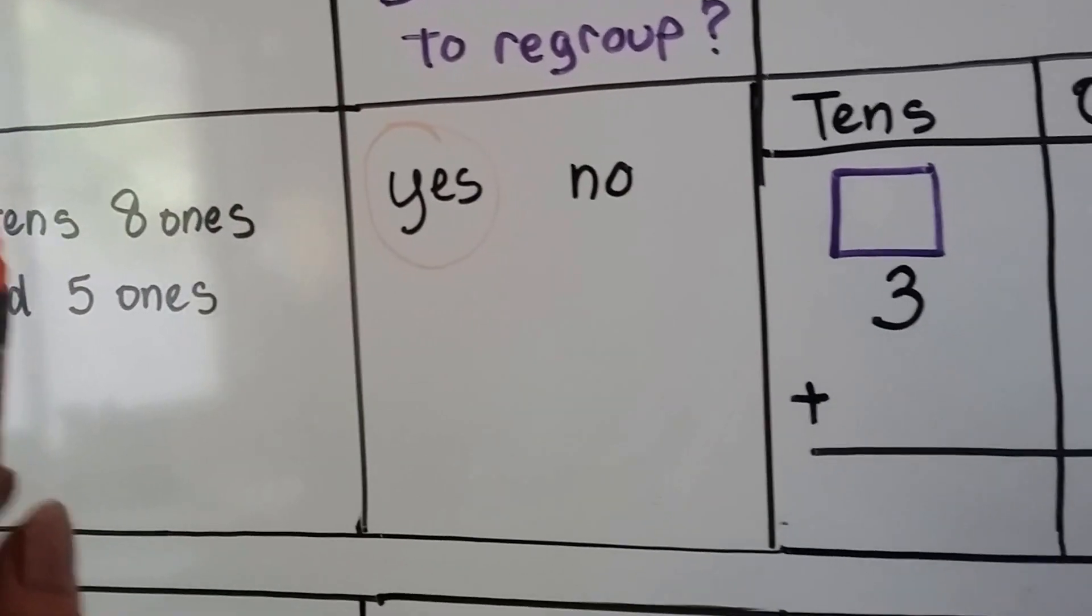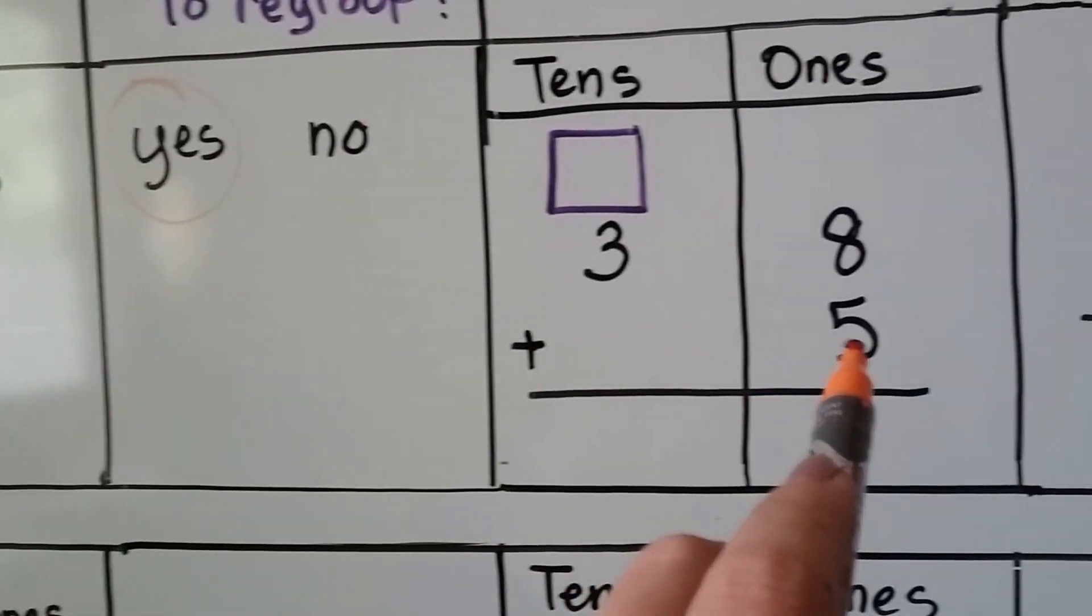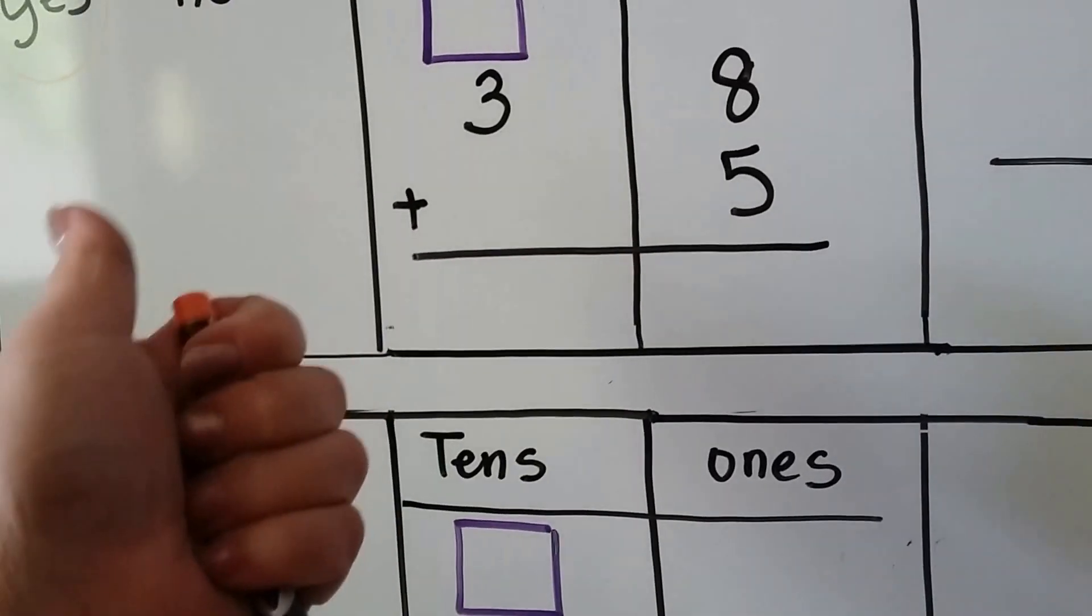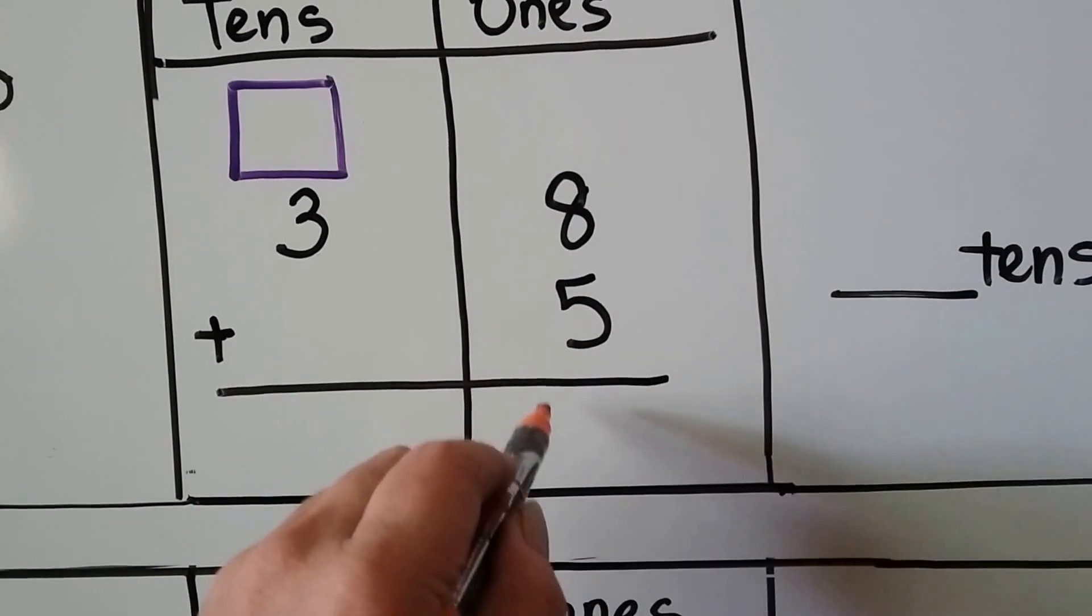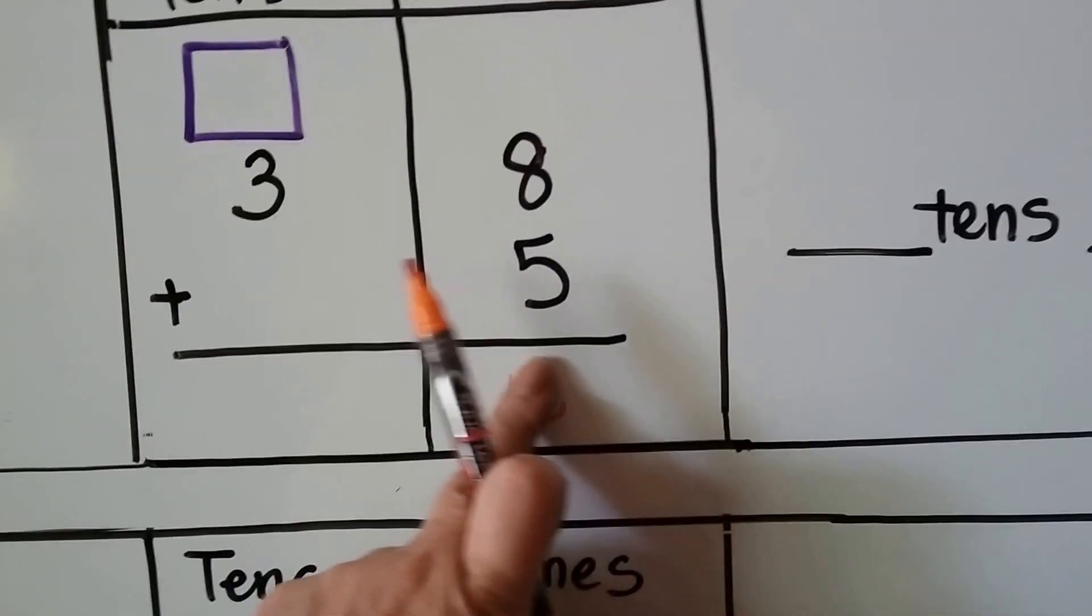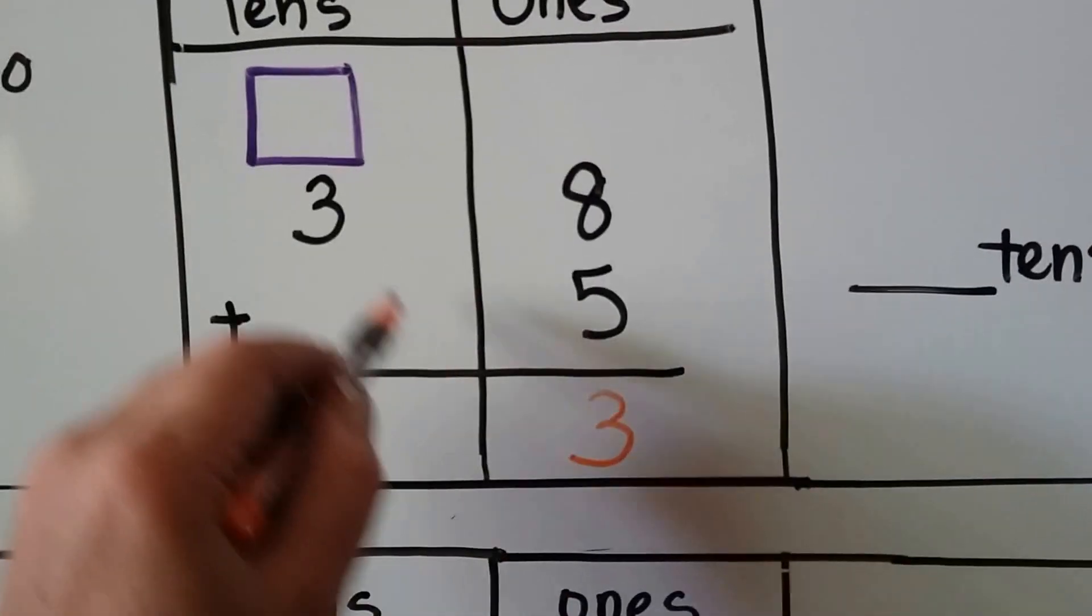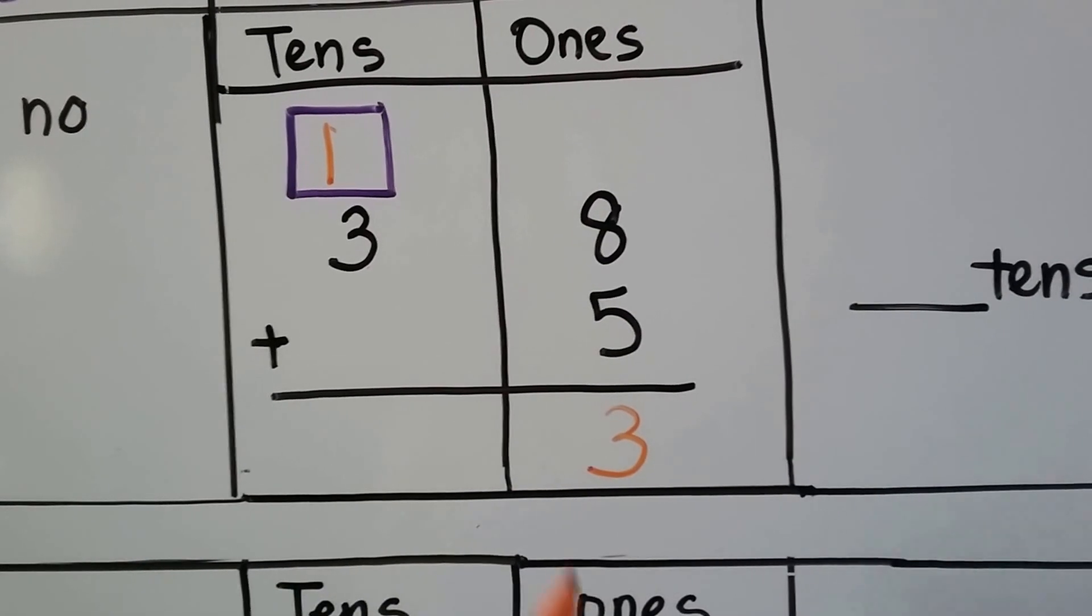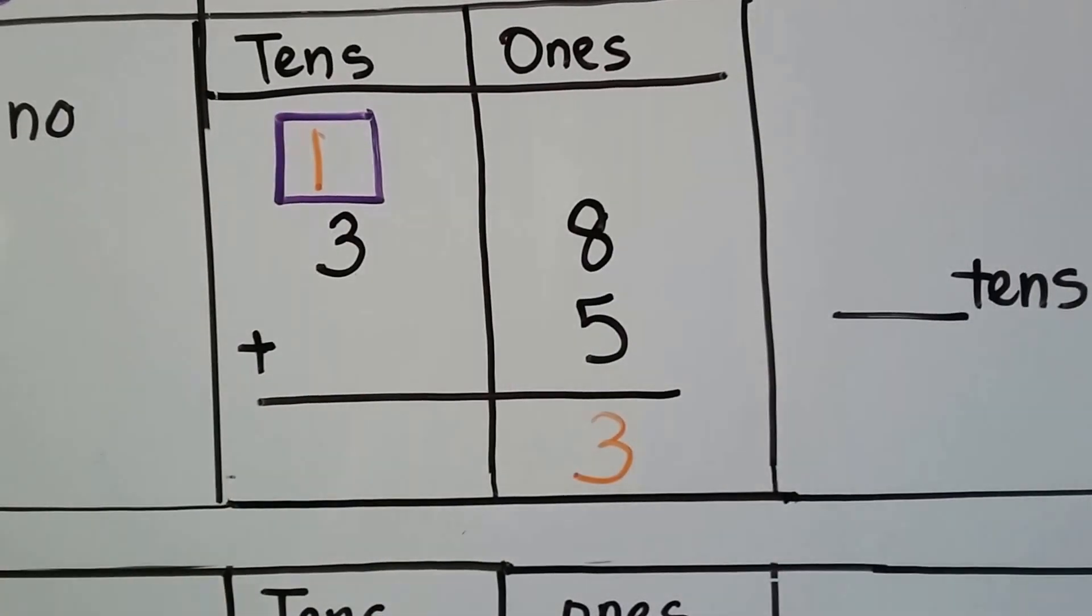So now, we do the 3 tens and 8 ones right here. 3 tens, 8 ones, and we add 5 ones. 8 plus 5 is 8, 9, 10, 11, 12, 13. Well, that's 13. We're going to put, instead of putting 2 digits in this column, because that's not allowed, we can only put 1 digit in each place value. So we're going to put the 3 from the 13 here, and the 10 from the 13 here. See? We group the 13 ones into a 10 and 3 ones, and we put that 10 in the tens column.